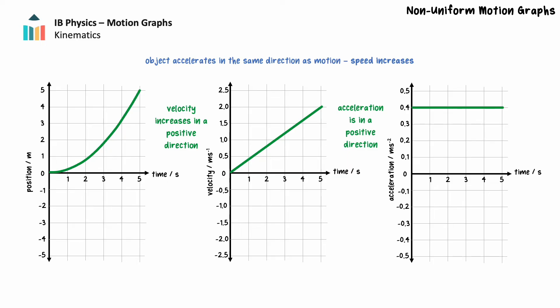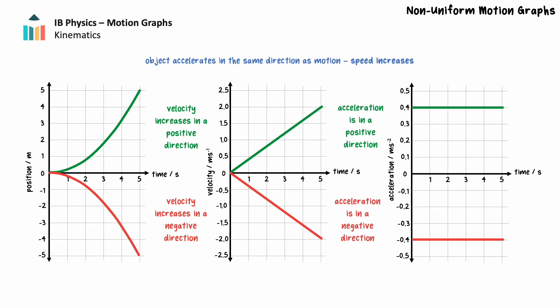We see similar graphs when an object moving in a negative direction accelerates in a negative direction. The position time graph gets steeper over time in a negative direction, so the velocity increases over time in a negative direction and the acceleration is constant in a negative direction.